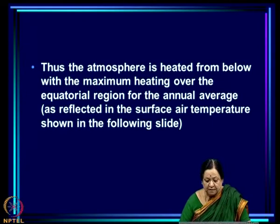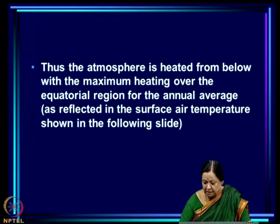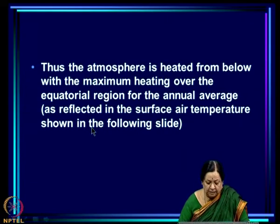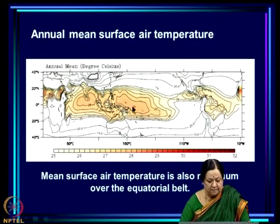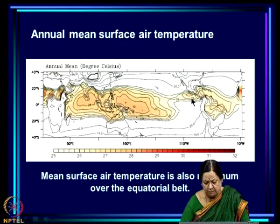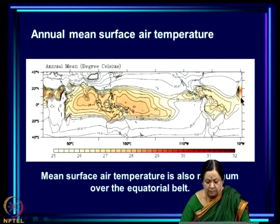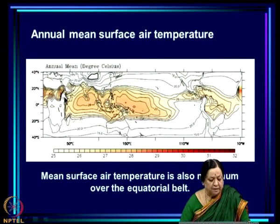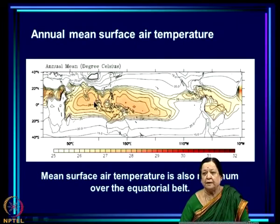Looking at the annual average, the atmosphere is heated from below with heating being maximum around the equatorial region and decreasing as you go poleward on either side. This implies that surface temperature behaves in the same way — the annual mean surface air temperature is maximum in the equatorial region and decreases as you go poleward.